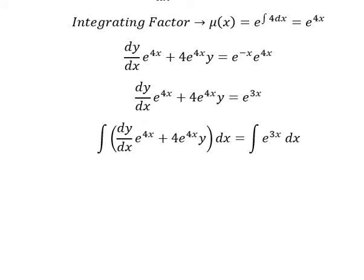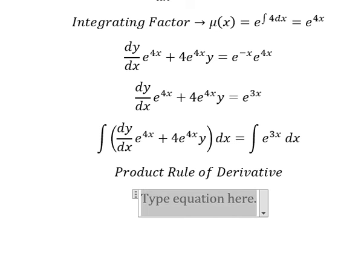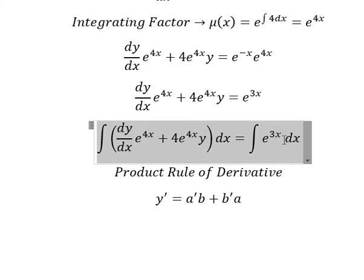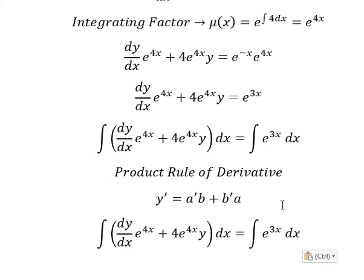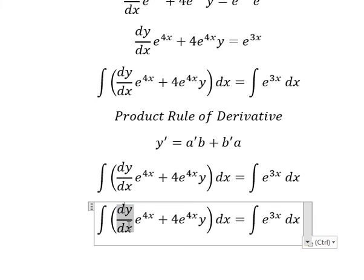Next we can use the product rule of the derivative. We have the first derivative of y equals first derivative of a multiplied by b plus first derivative of b multiplied by a. If we look carefully at this, we have the first derivative of a.